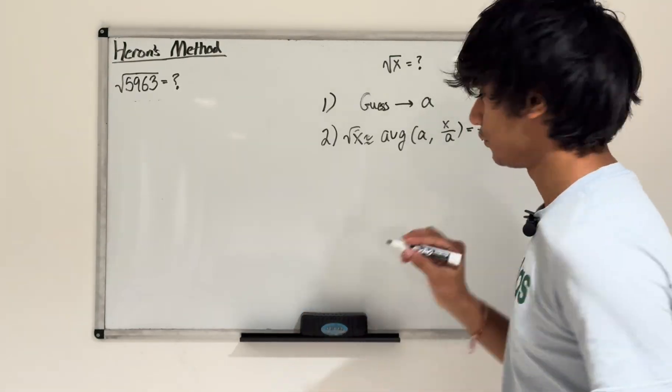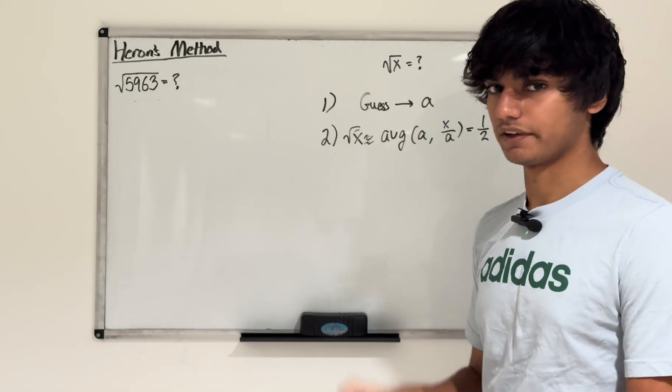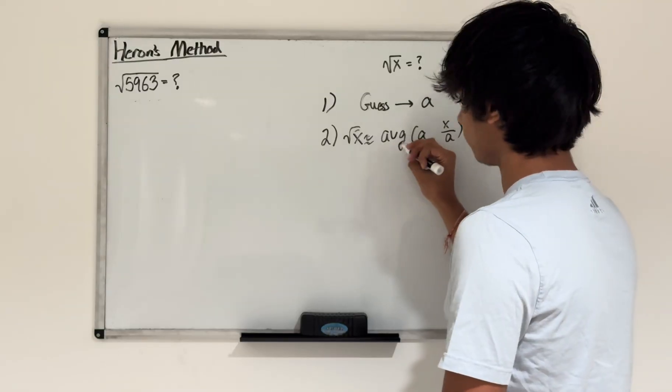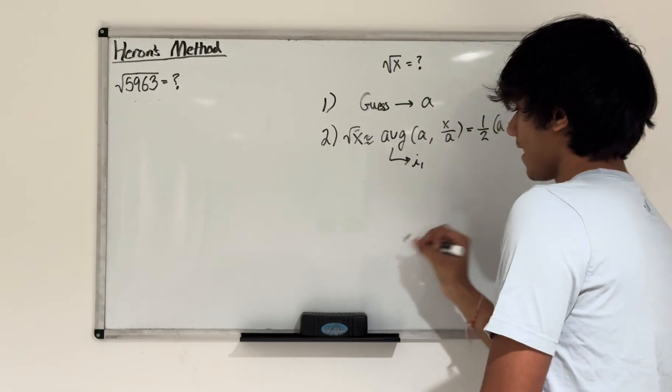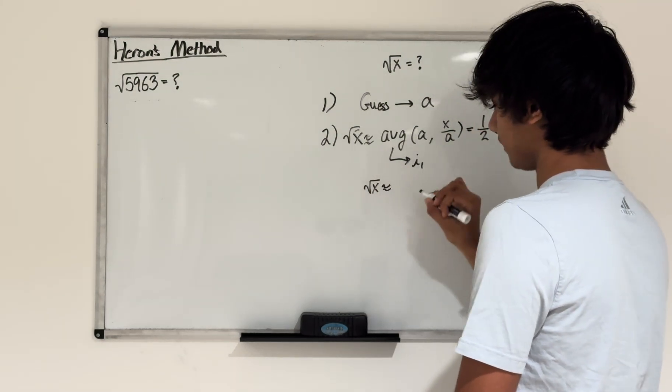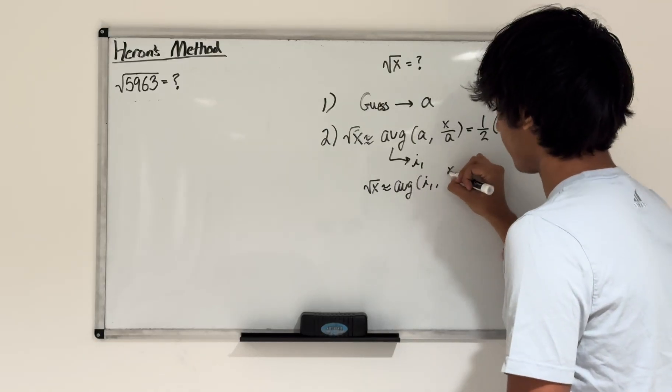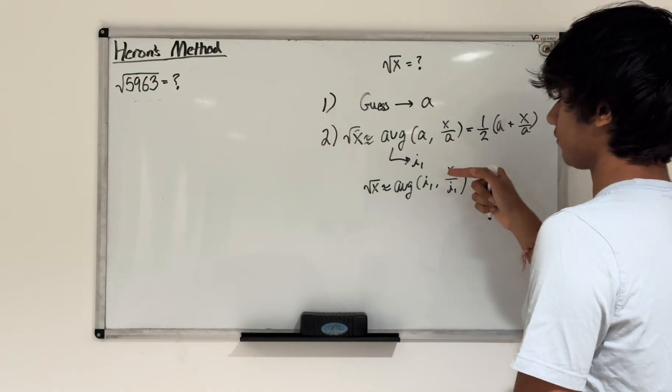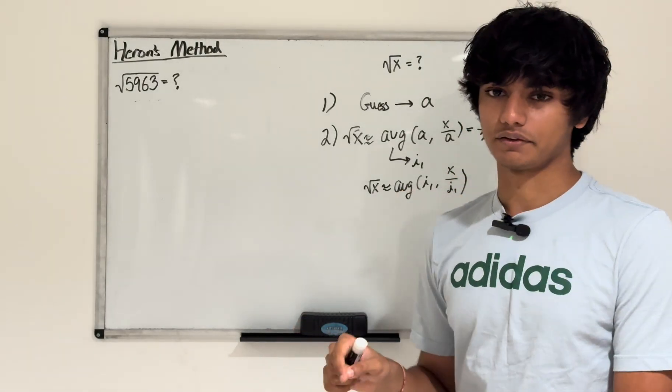That's really the only step you have to do to get a very accurate guess. But if you want to be even more accurate, this is what Heron did to find the value of square roots to a very accurate degree. You can also keep doing this process again and again, iteratively in other words. So you can set this value equal to i sub 1, and then you can say square root of x is estimated to the average of i sub 1 and x divided by i sub 1. You can keep doing this process again and again, and you're going to eventually get to a value that's really close to square root of x.